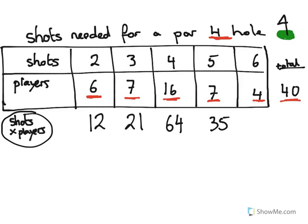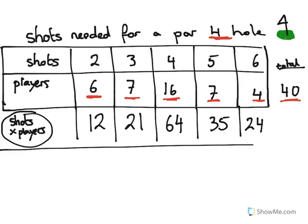6 fours, 24. So here we get the number of shots times the number of players. Very useful now, because now the average is really easy for us to work out.